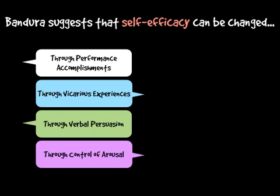Good examples for each of these four factors: for performance accomplishments, we simply remind them of previous success — remind them of what they've done before. For instance: this is a new task, you're shooting a ball into a netball net, and we can say to them: well, you've done this before, you did pretty well at it — can you remember this? And try again.